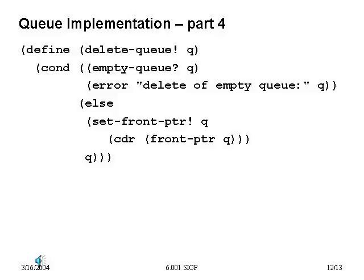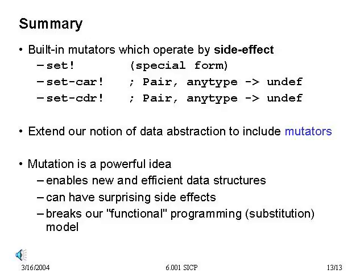To summarize: we can add mutation to our data abstractions. Mutations operate by side effects — they change the actual values of data structures rather than creating new versions. We saw three kinds: `set!` changes variable bindings; `set-car!` and `set-cdr!` change portions of a pair and therefore any list structure. We can extend our notion of data abstraction to include mutators, gaining real power — much more efficient data structures. But by introducing mutation into our language, we've added a notion of time: things are no longer purely functional, the substitution model no longer works, and we'll have to come back and fix that.